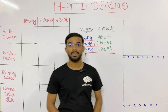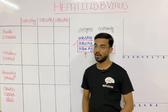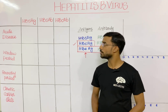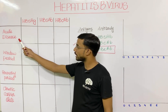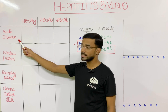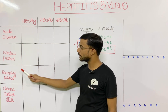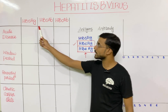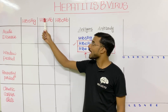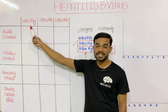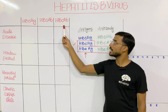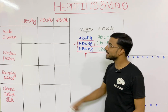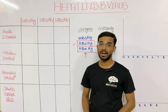We will understand these markers with the help of a graph. We have four states: acute disease, window period, recovery period, and chronic carrier state. Against them we will look at Hepatitis B surface antigen, surface antibodies, and Hepatitis B core antibody.